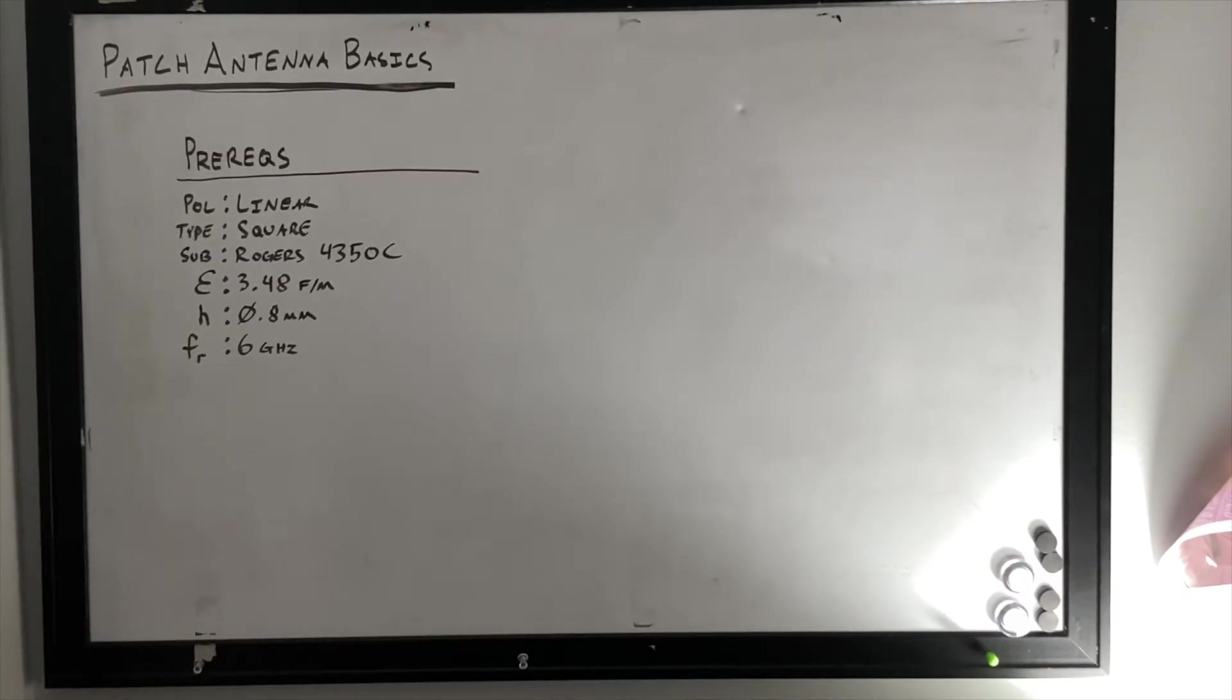Okay, so before we actually design our patch antenna, we need to clear some prerequisites out of the way. Firstly, we're going to go with a typical square patch antenna with linear polarization. This is probably the most primitive and easy to design, so that's what we'll start off with for today. Our substrate is going to be a Rogers 4350C, which has a dielectric constant of 3.48, and we're going to give it a height of 0.8 millimeters. And we're going to design our patch antenna today to resonate at around 6 gigahertz.